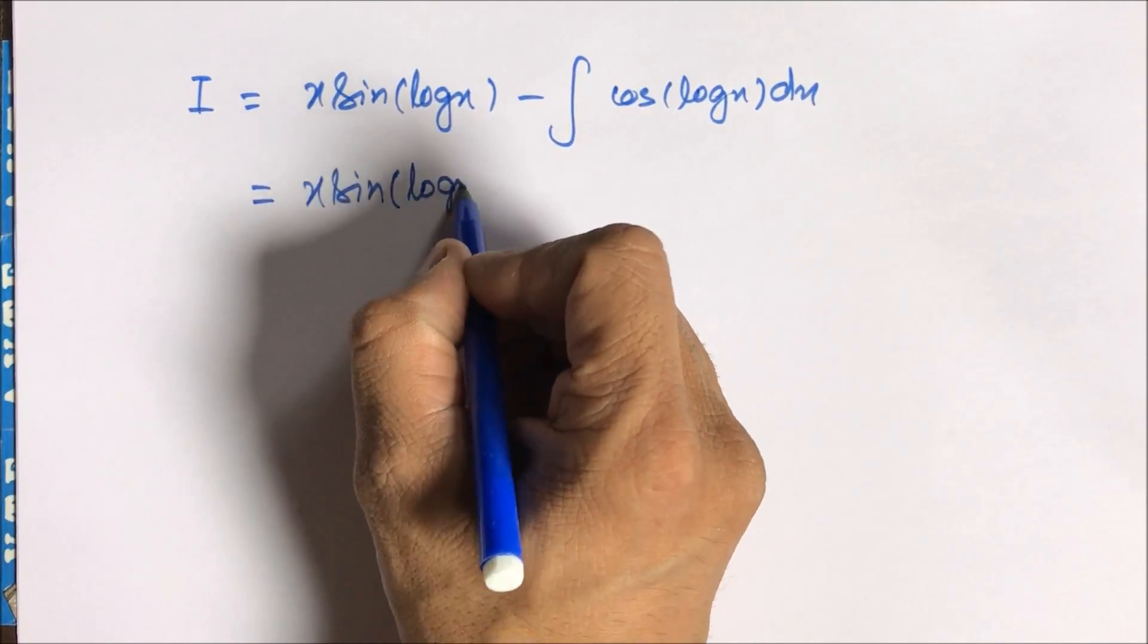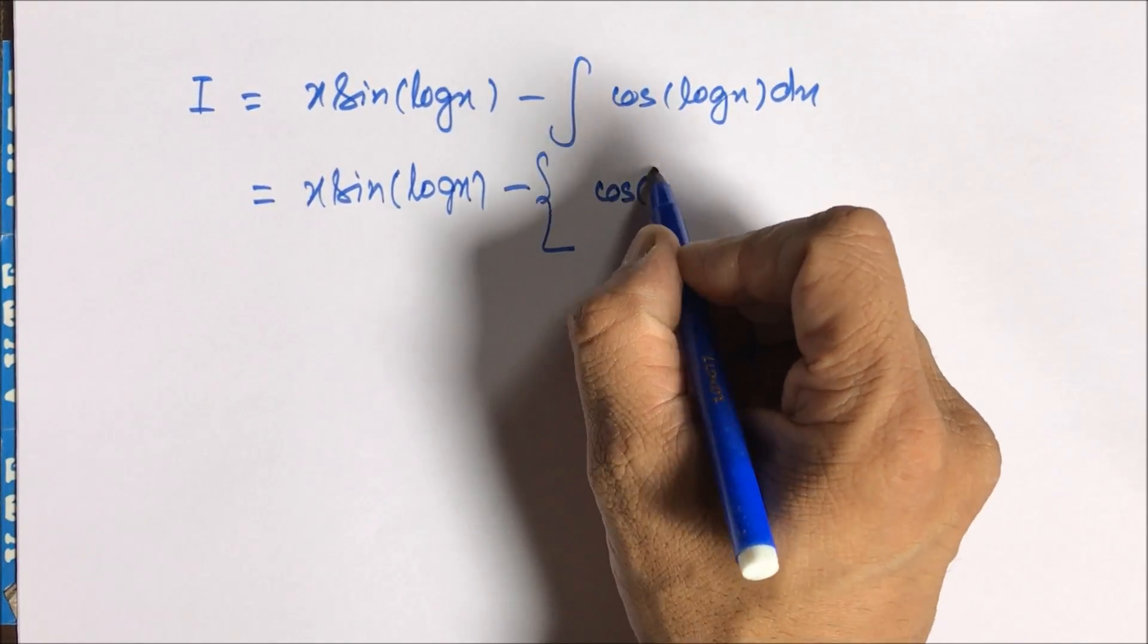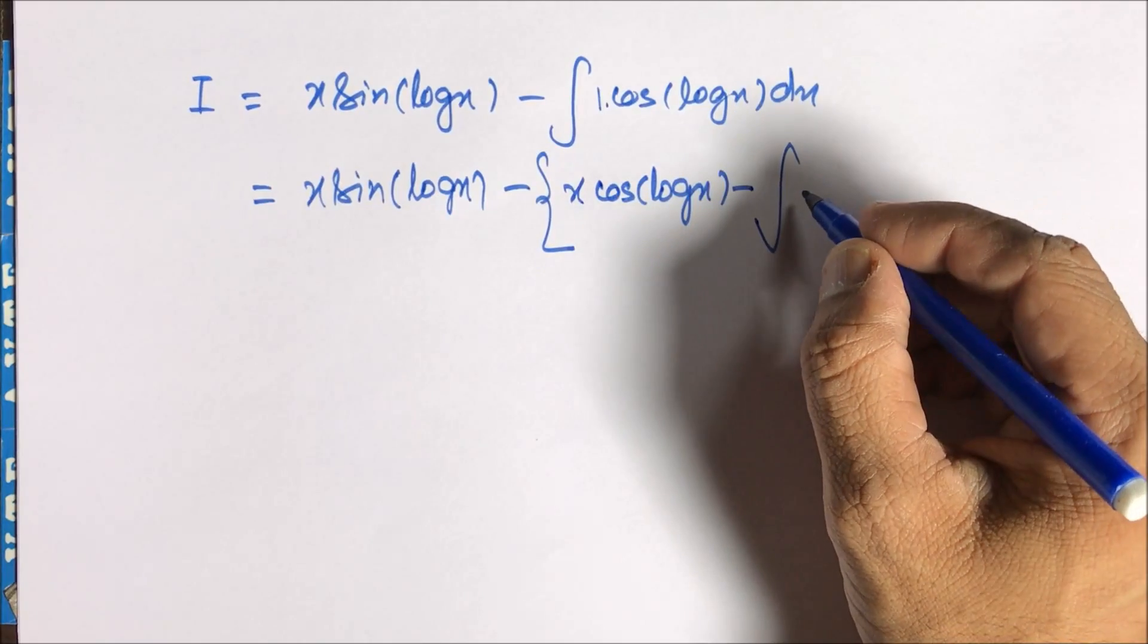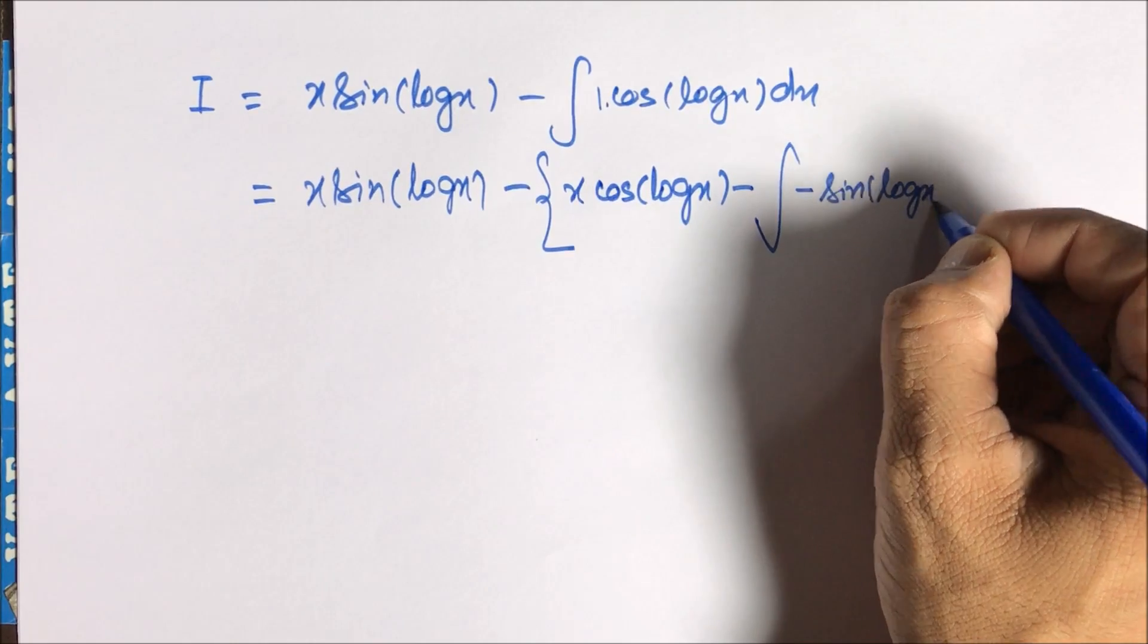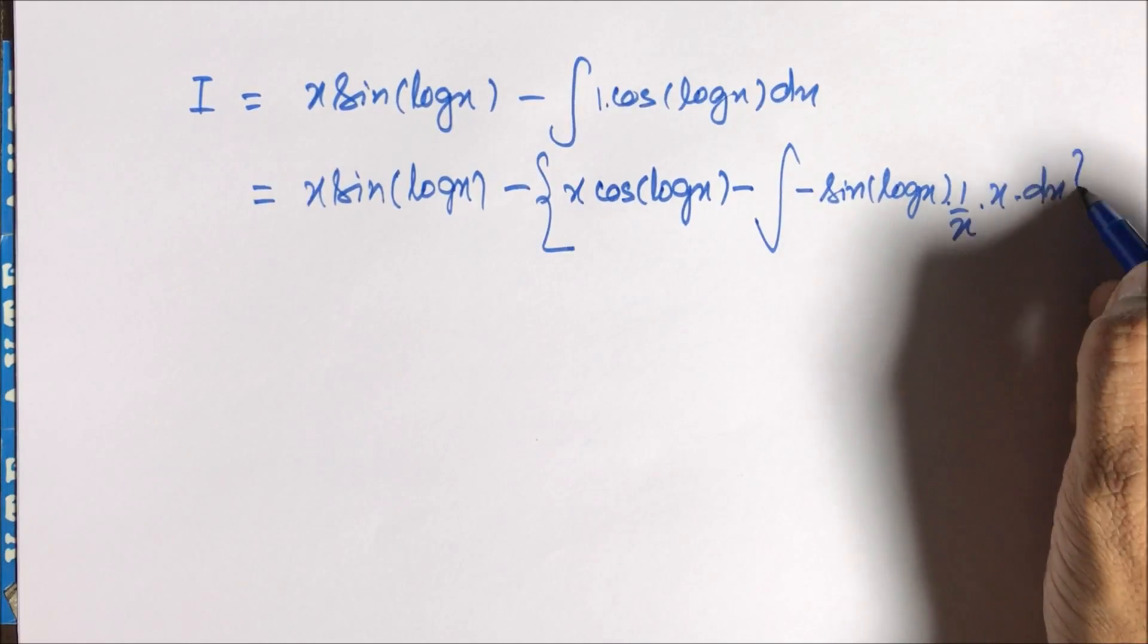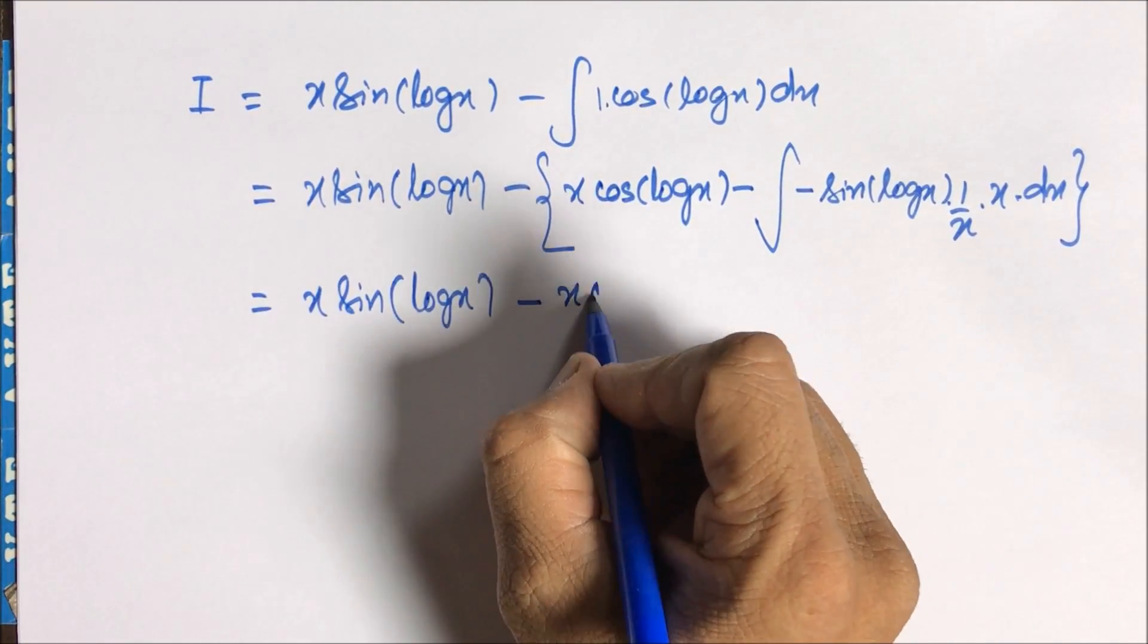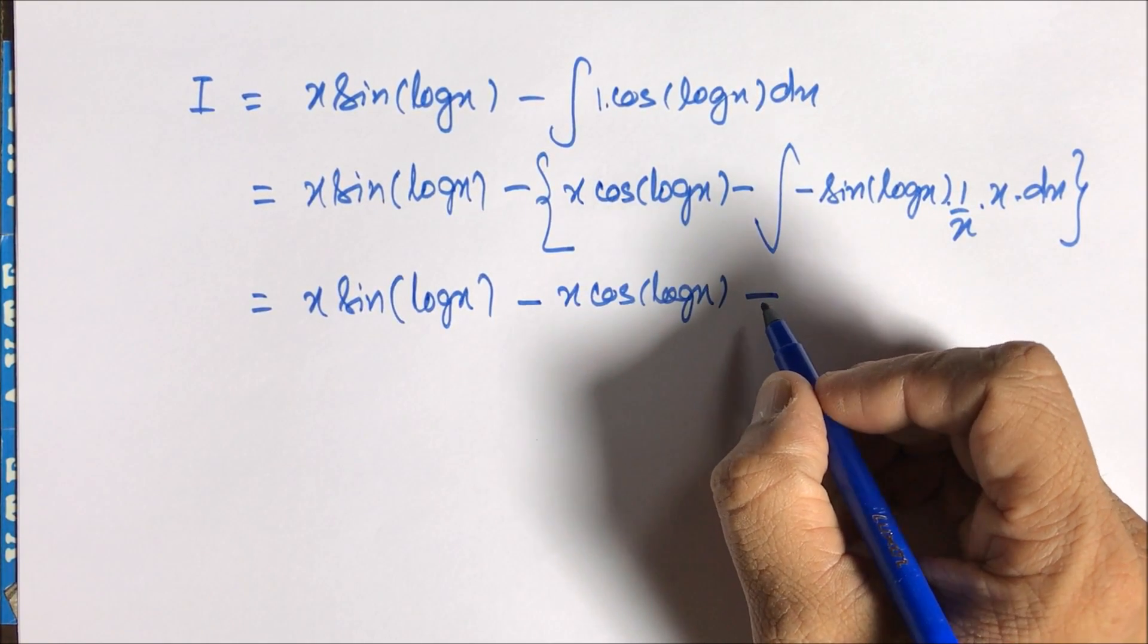So I'm keeping minus outside. First function cos(log x) as it is, into the integration of one is x, minus the whole integration of the derivative of cos(log x) is -sin(log x), into 1/x, into the integration of one is x dx. So this is x sin(log x) - x cos(log x), and one could see that we are back on to the question.